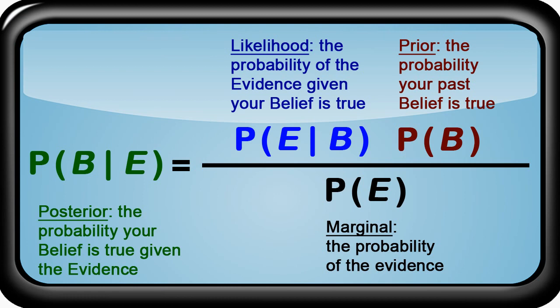Bayes' Theorem consists of four parts. The prior, P(B), is the probability your past belief is true. A prior distribution can be determined from the past, such as previous experiences, or it can be a purely subjective assessment, such as belief. The likelihood — the probability of evidence given belief — is the probability of experiencing the evidence given your belief is true. Also called the Bayes' Factor, the likelihood is the amount of information we learn about our belief from the data. The marginal, P(E), is the probability of experiencing the evidence. All of this is used to calculate the posterior — the probability your belief is true given the experienced evidence.